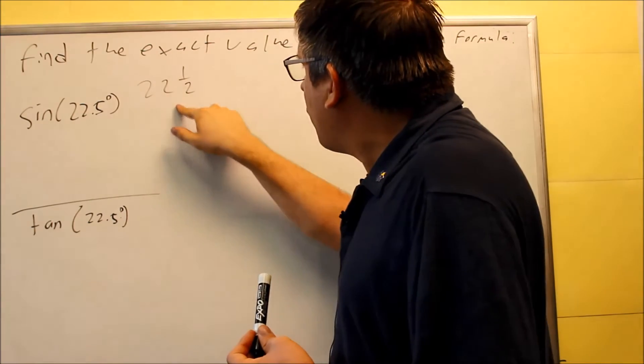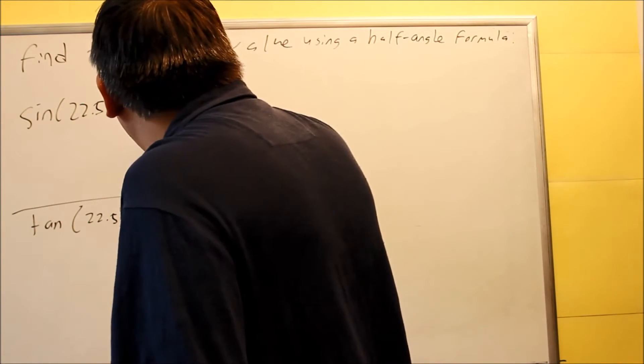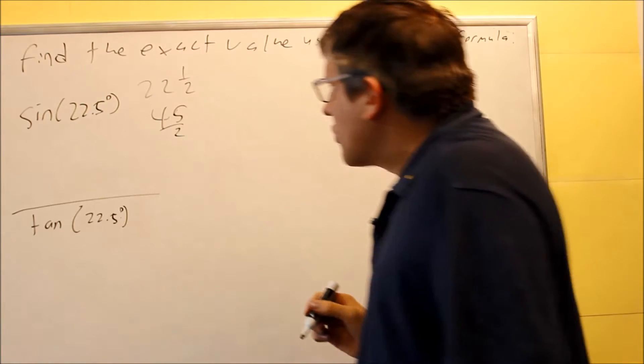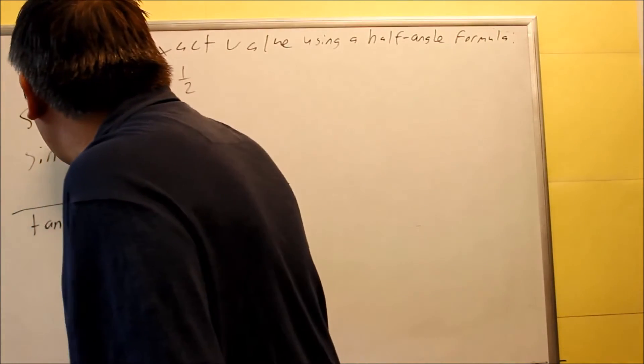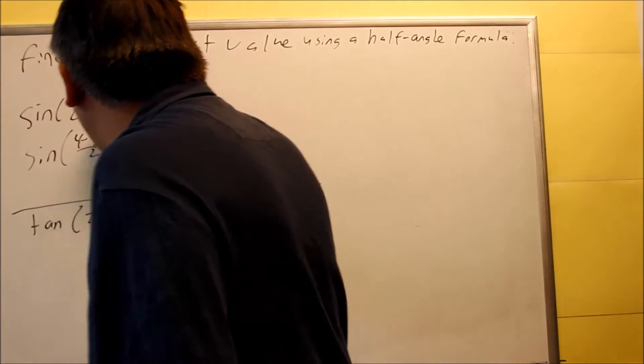We can change this into an improper fraction. We multiply these. 44 plus 1, that's 45 over 2. So that's going to be the fraction I'm going to put on the inside. I want 45 over 2.